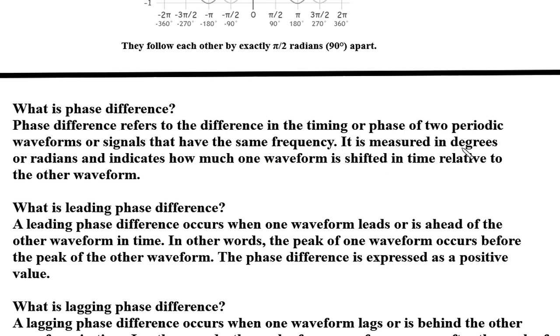Phase difference is measured in degrees or radians and indicates how much one waveform is shifted in time relative to the other waveform.